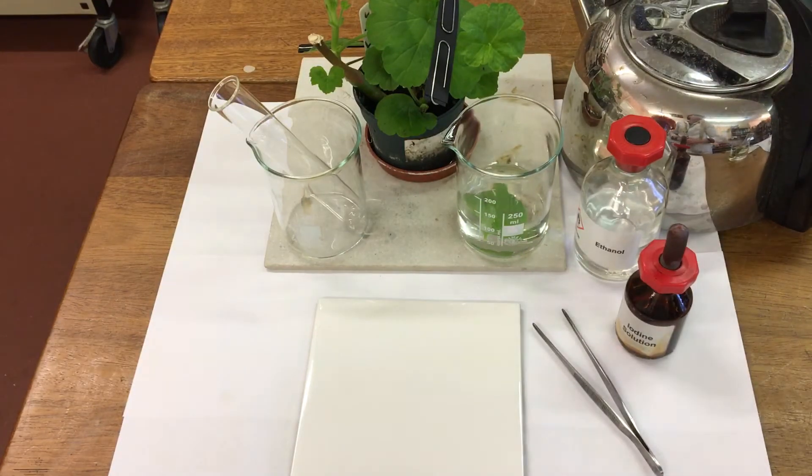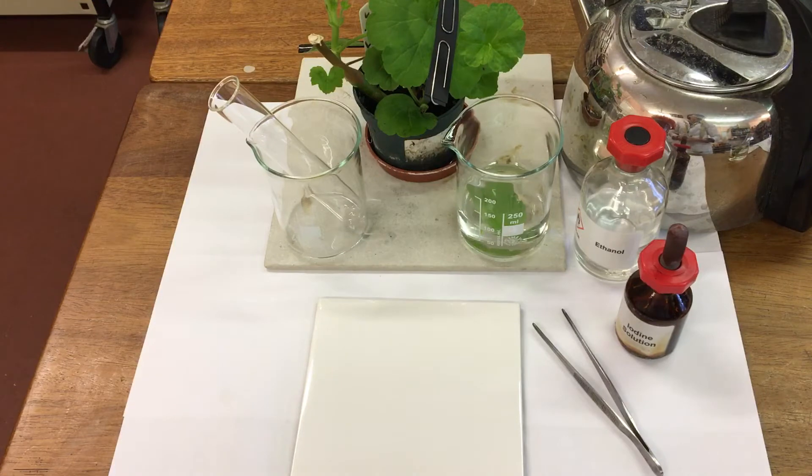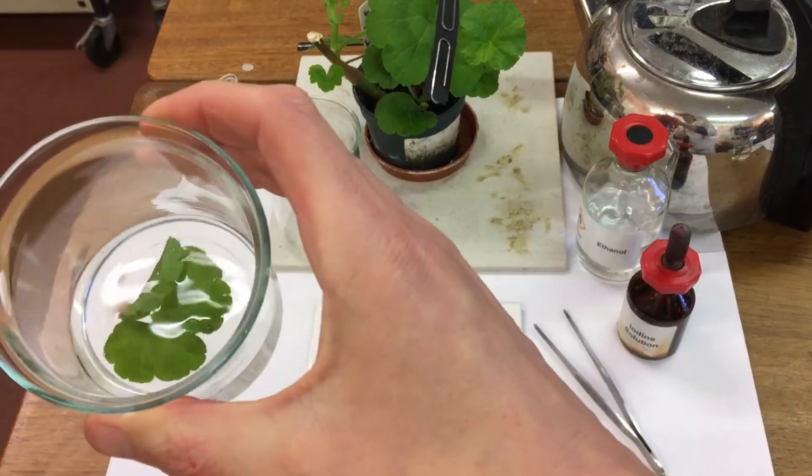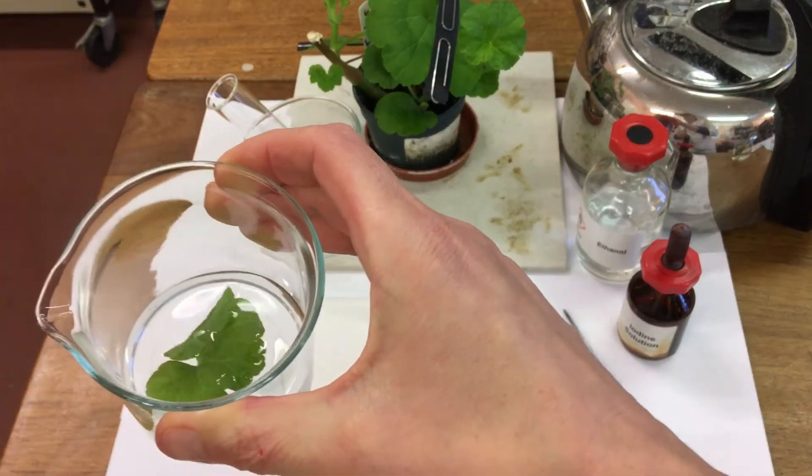So the boiling water kills the leaf, it destroys the cell membrane and it makes the cell all leaky. So we can see our leaf in there.